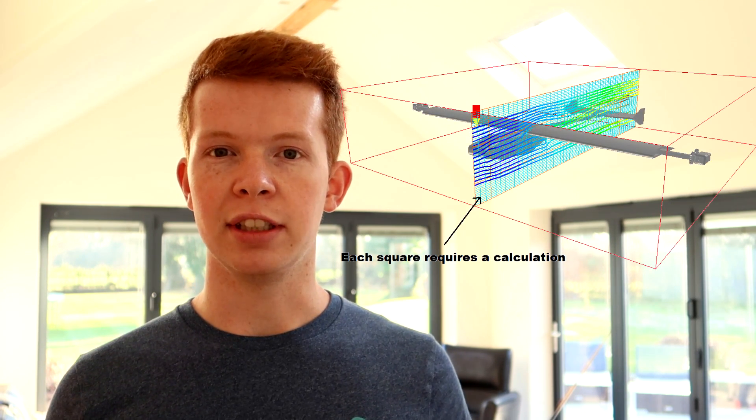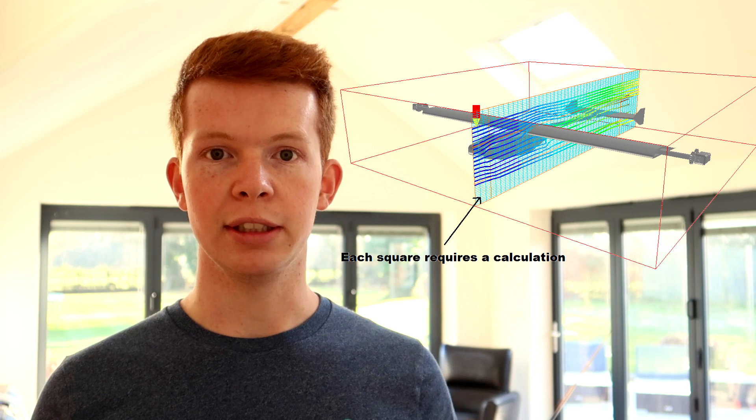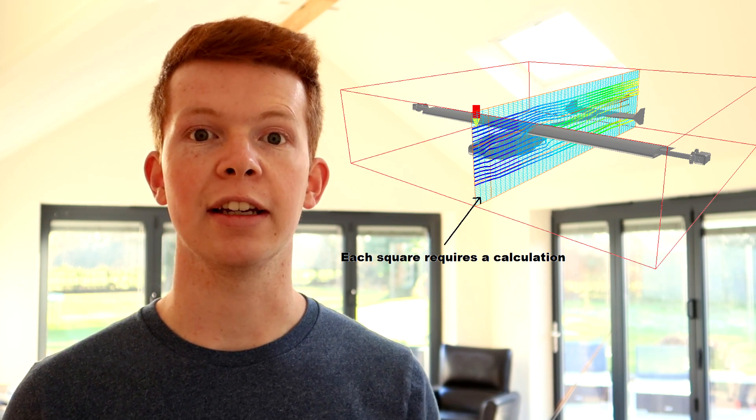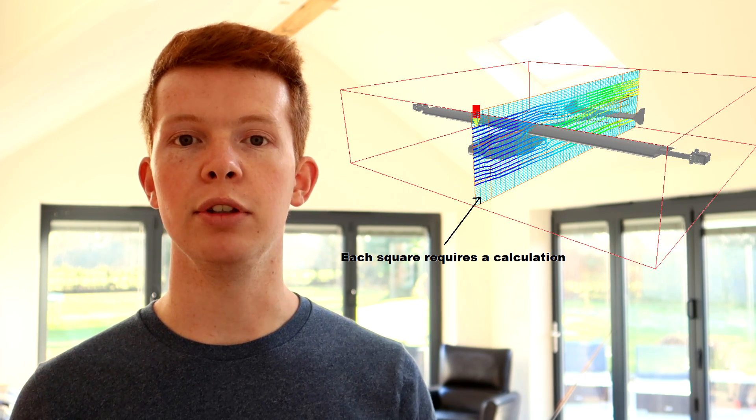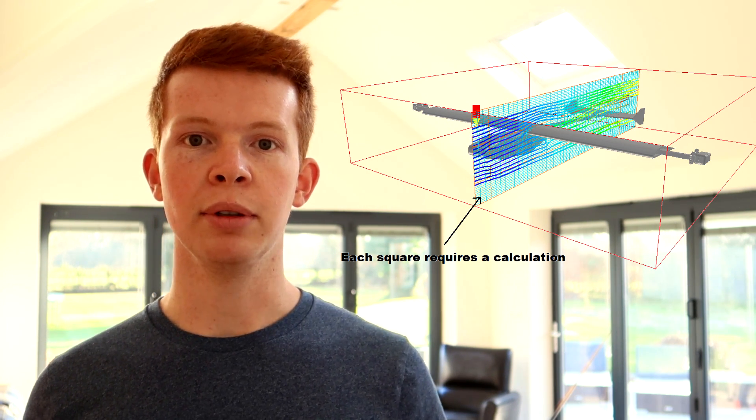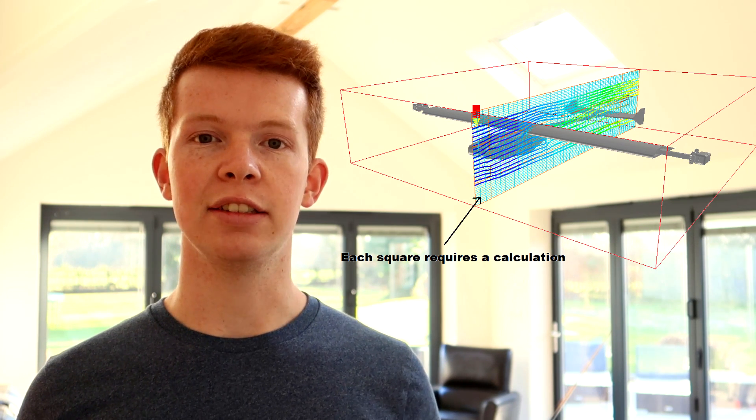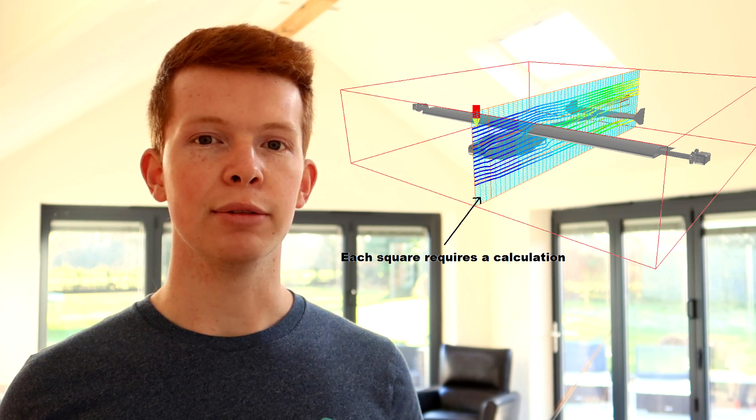For example, when you do the calculations for the CFD software, you can choose how many calculations it does per volume of the wind tunnel. Obviously, you want to have the most amount of calculations per volume to get the most accurate result. But even on a decent PC, this still takes ages to do, and the results still aren't perfect. So whether it takes two minutes to calculate an alright result, or two hours to get a pretty accurate result, I know that I'd still rather be out in the field using some good old trial and error.